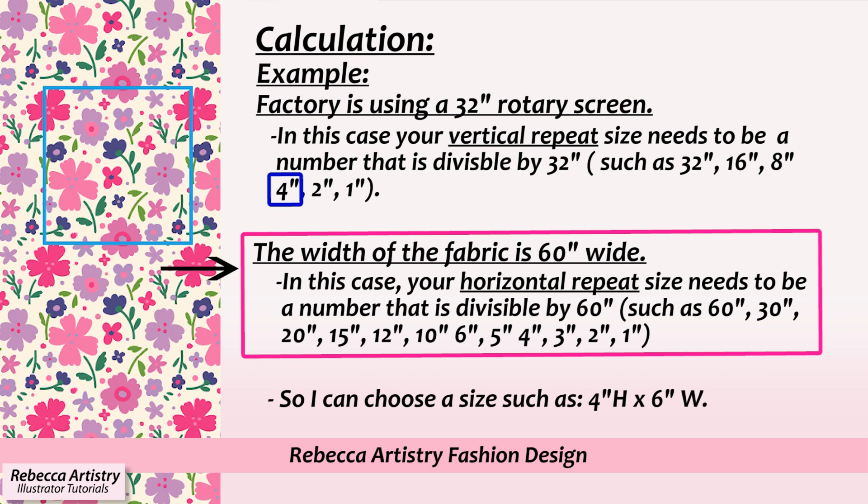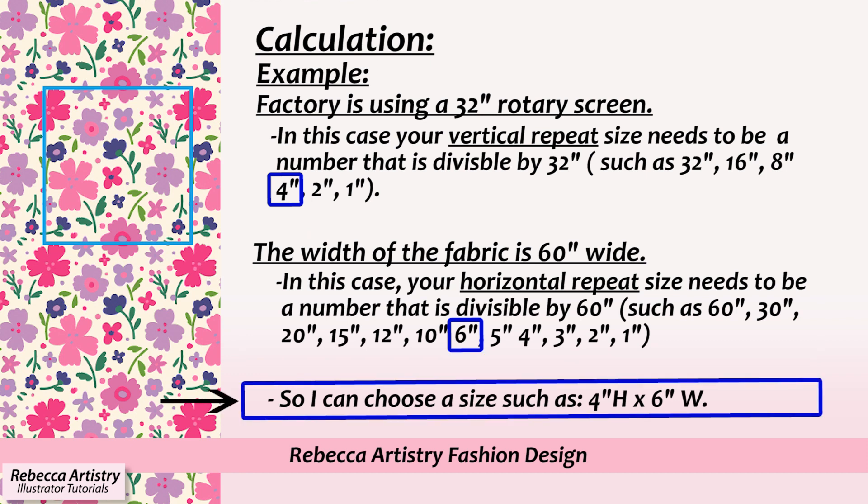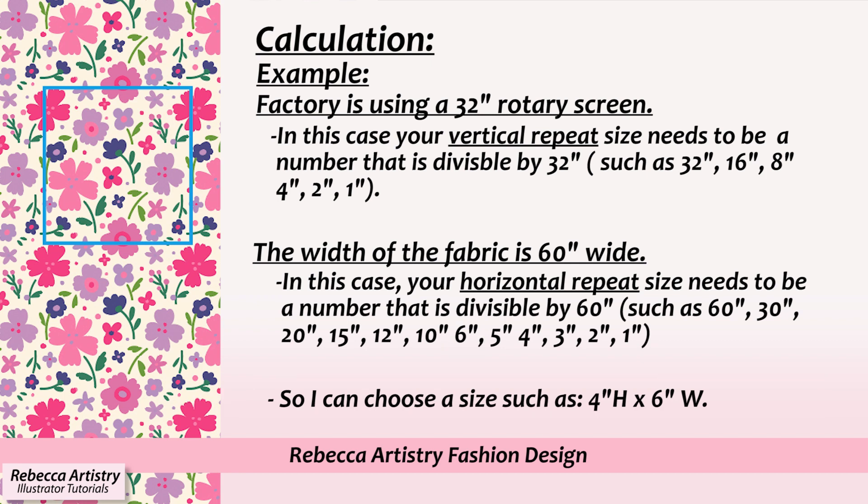Then you would look at the fabric width. If you were working with a 60-inch wide fabric, the width of your repeat should be a number evenly divisible by 60 inches — so I'll pick 6 inches for the width. So my repeat will be 4 inches in height by 6 inches in width. Now you know the calculation, but my best advice is just ask your company what the repeat size should be. Don't overcomplicate things — this is usually the best and safest thing to do.